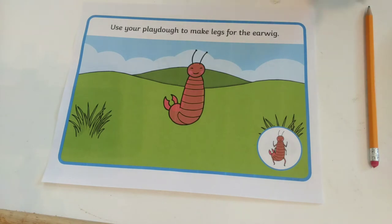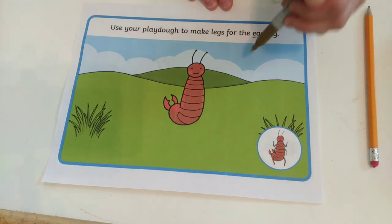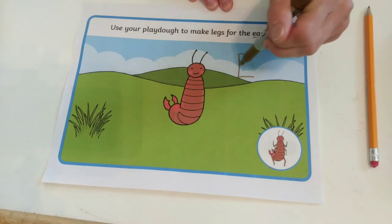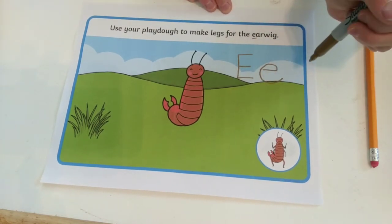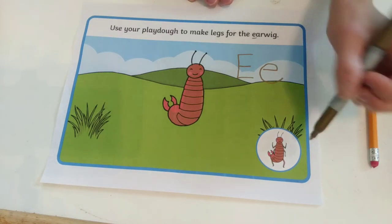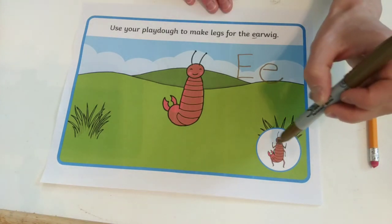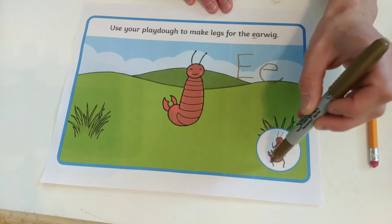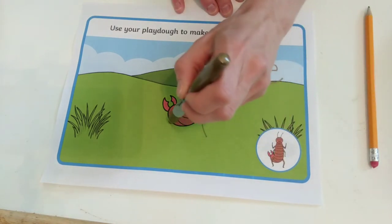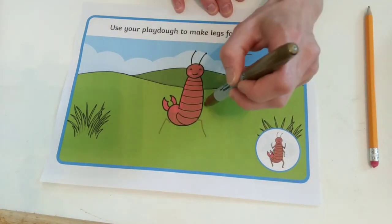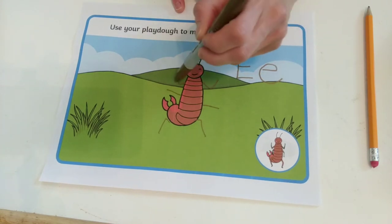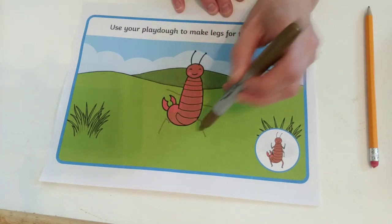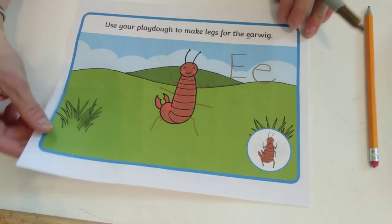This is called an earwig — what a silly name! Earwig begins with letter E, capital E, lowercase e. And it says we can add the legs for the earwig. I'm going to start with the bottom legs and then give him his middle legs and his top legs — one, two, three, four, five, six legs. So silly.